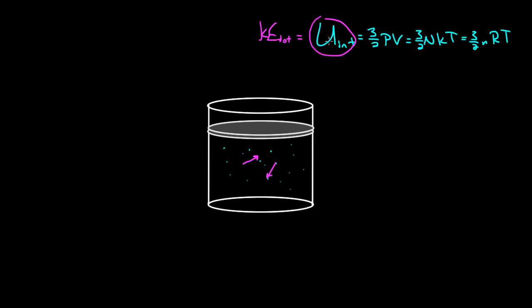There are basically two ways to change the internal energy. If you want to add internal energy — get these particles moving faster — we can heat it up. Put this above a flame or on a hot plate, and heat will flow into the gas, causing these particles to move faster and faster. The other way is to do work on the gas: take this piston and push it down, squashing the gas together. Those impacts with the moving piston will cause the particles to start moving faster, also adding internal energy.